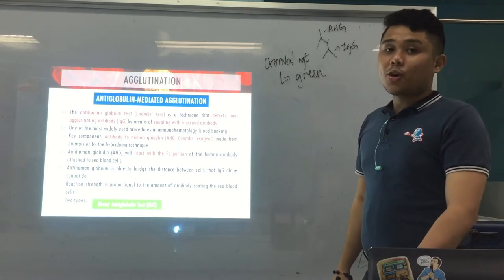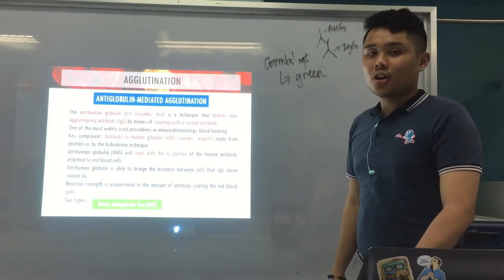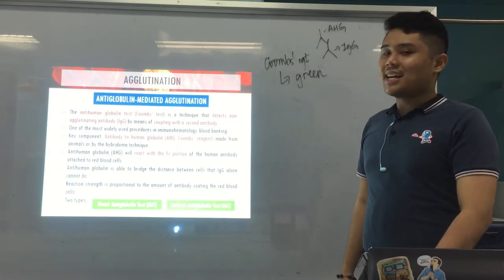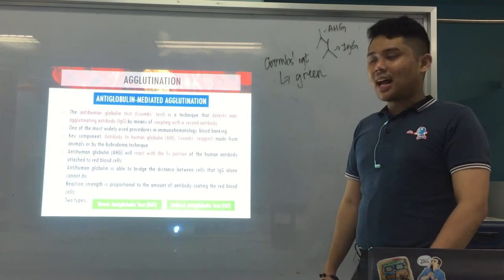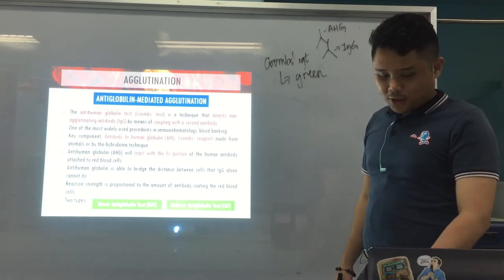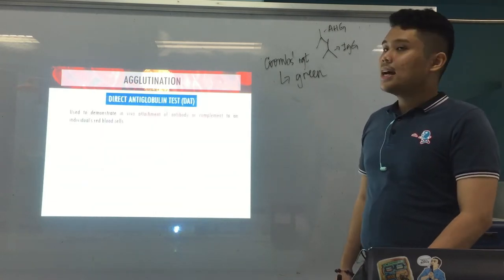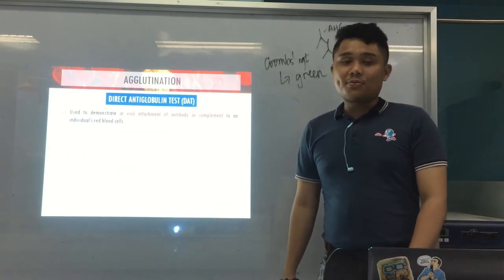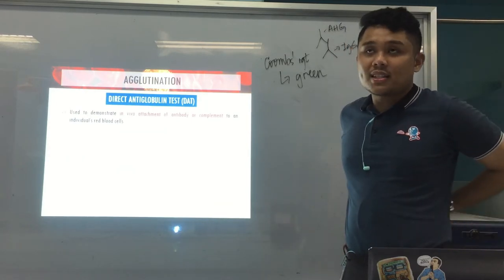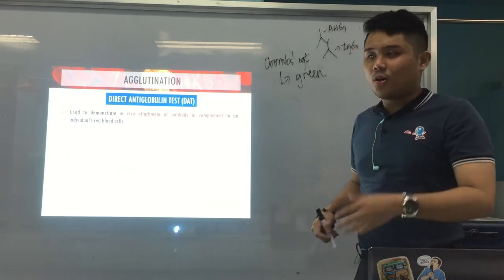You have two types: your Direct Anti-Globulin Test, or DAT, and your Indirect Anti-Globulin Test, or IAT. We'll start with the Direct Anti-Globulin Test. By the name itself — direct — we use this test to demonstrate in vivo sensitization of RBCs.